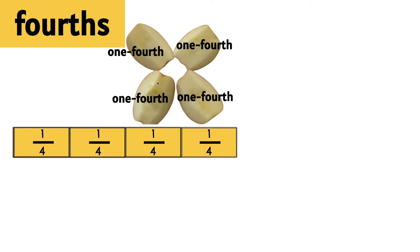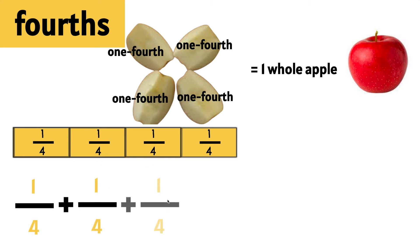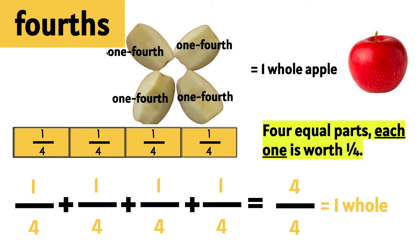If we put all four fourths together we get one whole apple. In the same way, one fourth plus one fourth plus one fourth plus one fourth gives us four fourths. We have all four of the fourths, which means we have one whole. Fourths are made when you have a whole that is split into four equal parts and each one is worth one fourth.